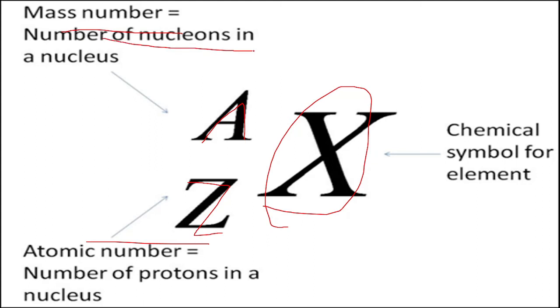So children, nucleons contain protons and neutrons. The sum of protons and neutrons is the number of nucleons, and we call that the mass number. And Z is the number of protons in a nucleus.